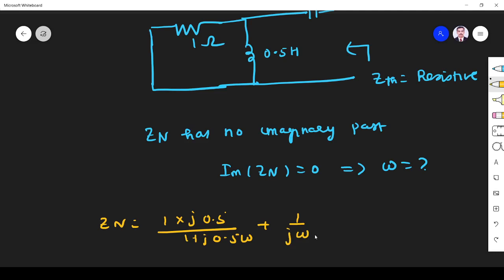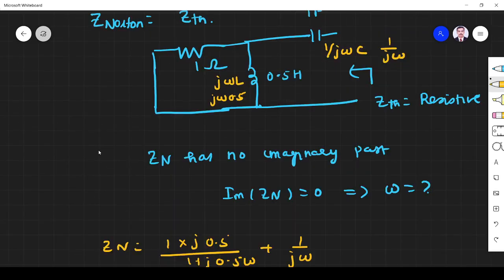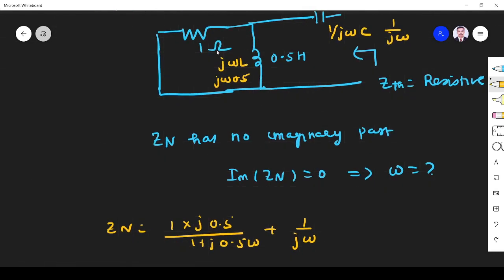...because it is 0.5 henry. What is the impedance? I will write it. It is jωL, which is jω·0.5. And it is 1/(jωC). Since C is 1, it is 1/(jω). So these two are in parallel: 1 times j0.5ω divided by 1 plus j0.5ω...